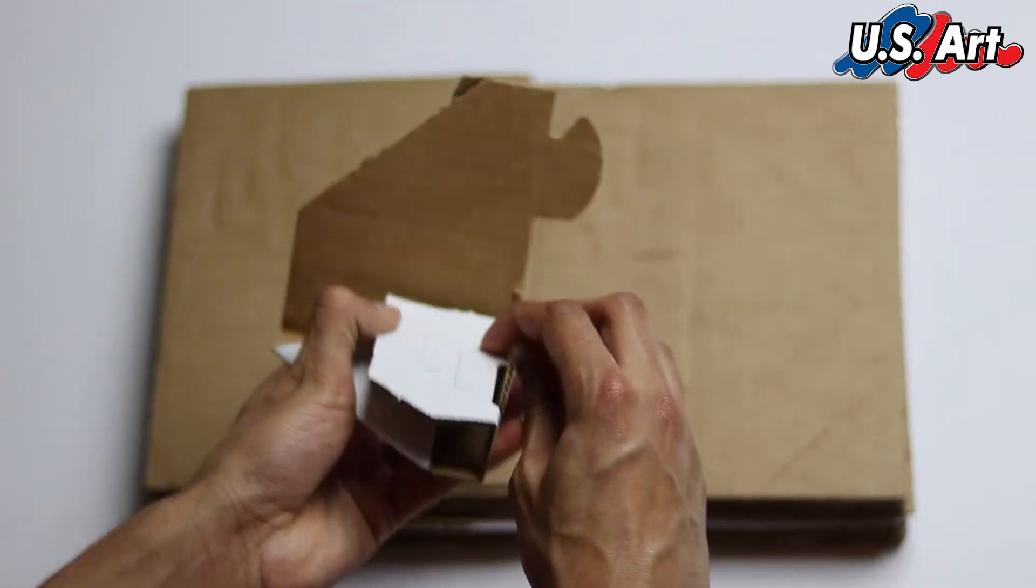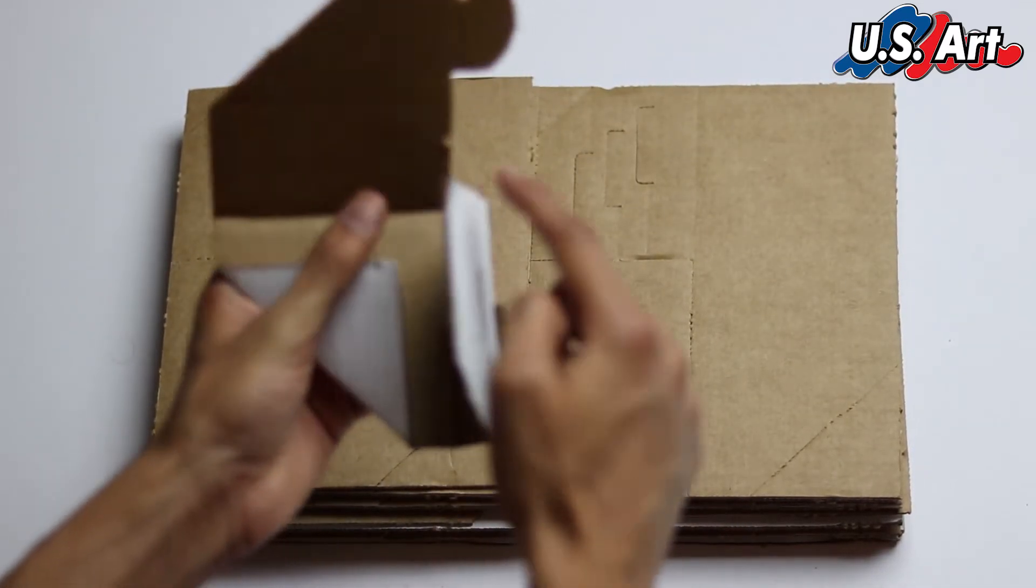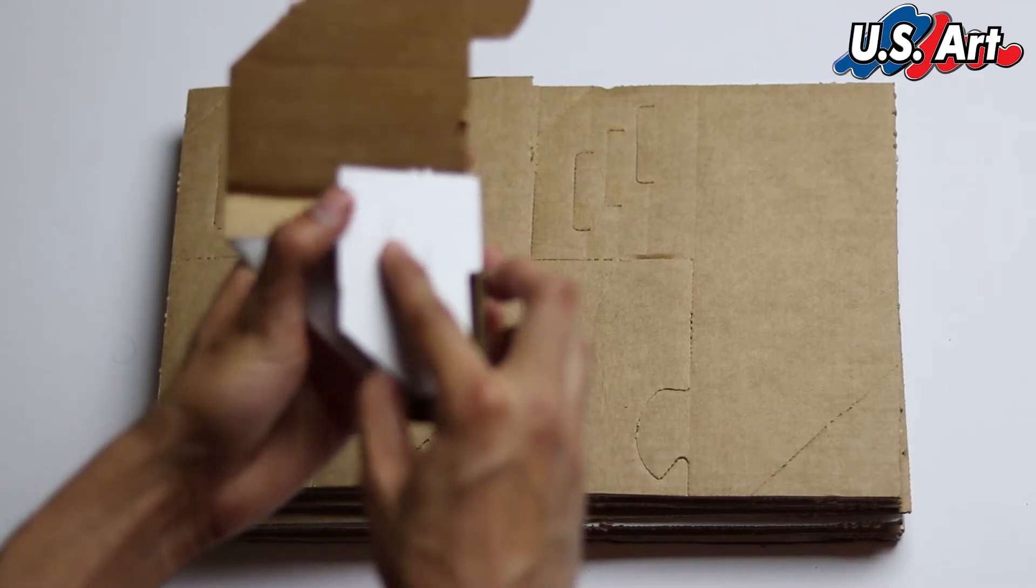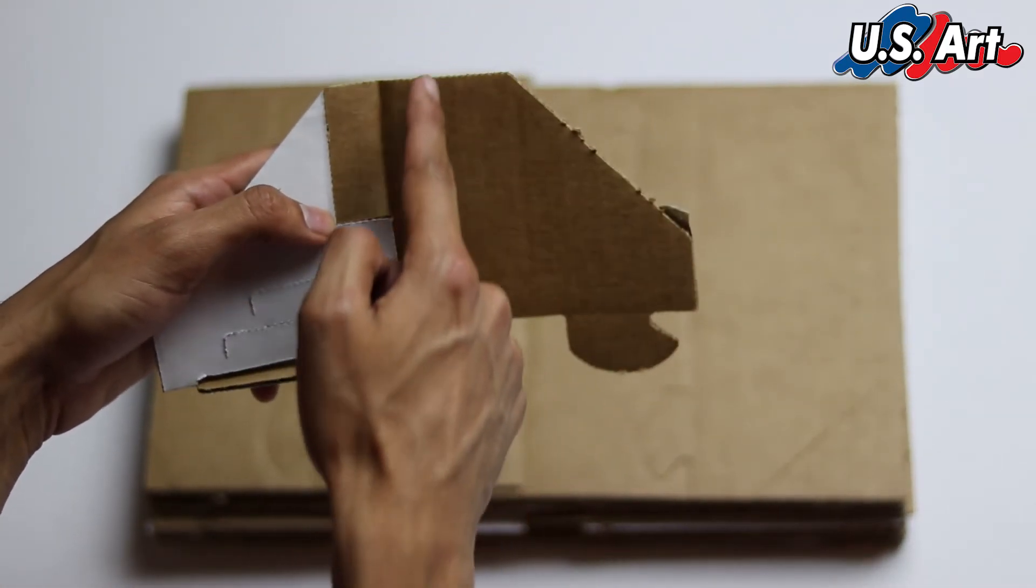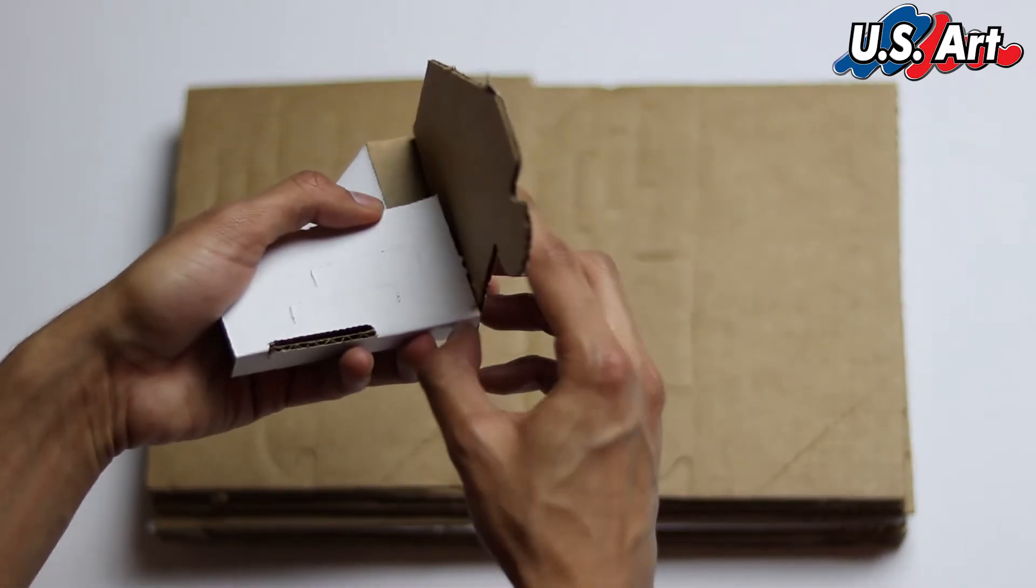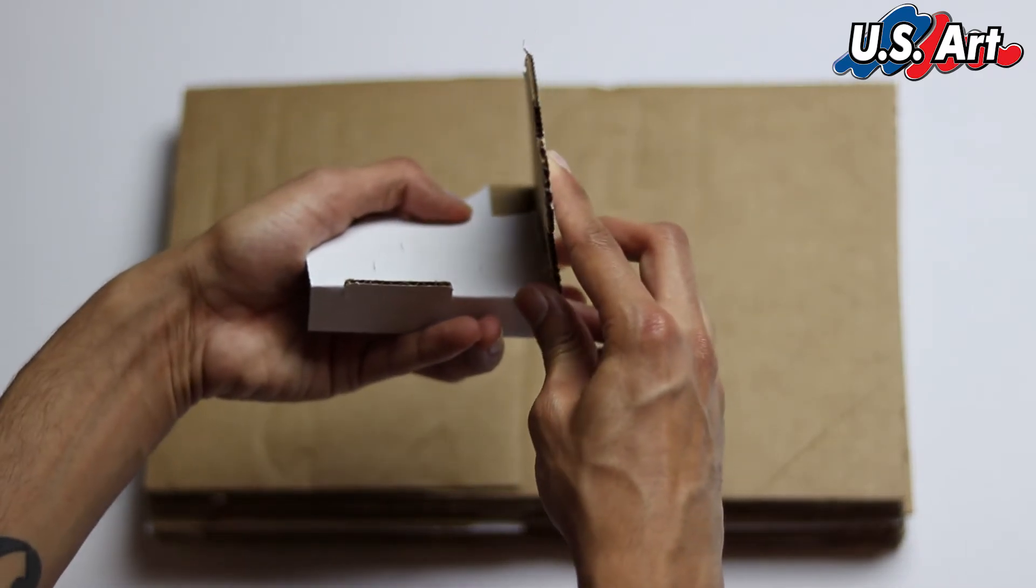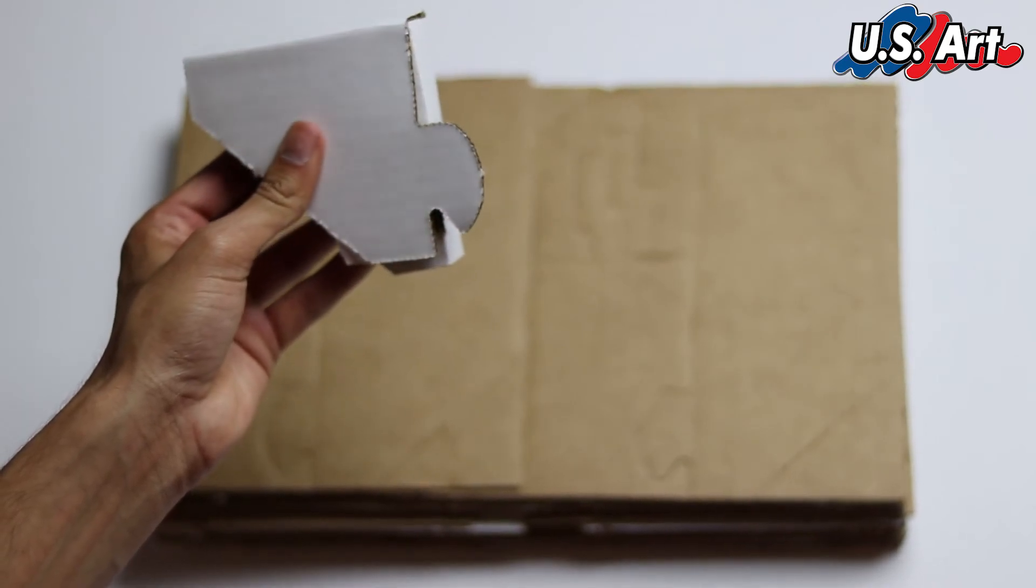And then you see how with this line right here, once it's folded over, there's also a line right here. You'd fold along that line and you'd be left with this.